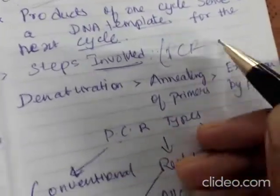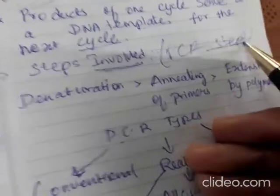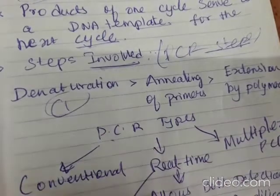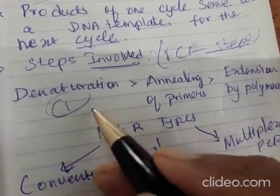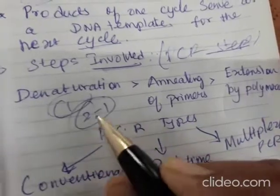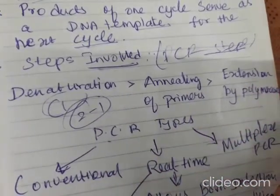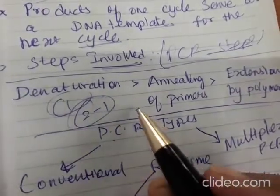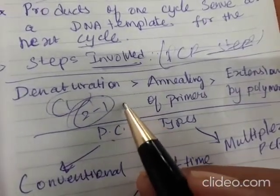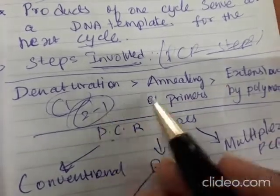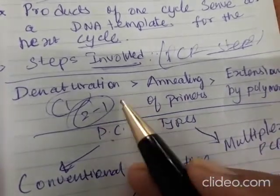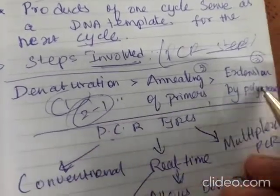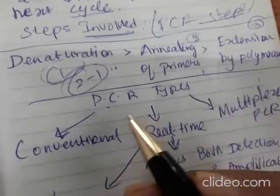There are three steps involved in PCR. The first step is denaturation — double strand to single strand. Then annealing of primers. Then extension by polymerase. These three steps proceed in ascending order: denaturation, annealing, and extension by polymerase.